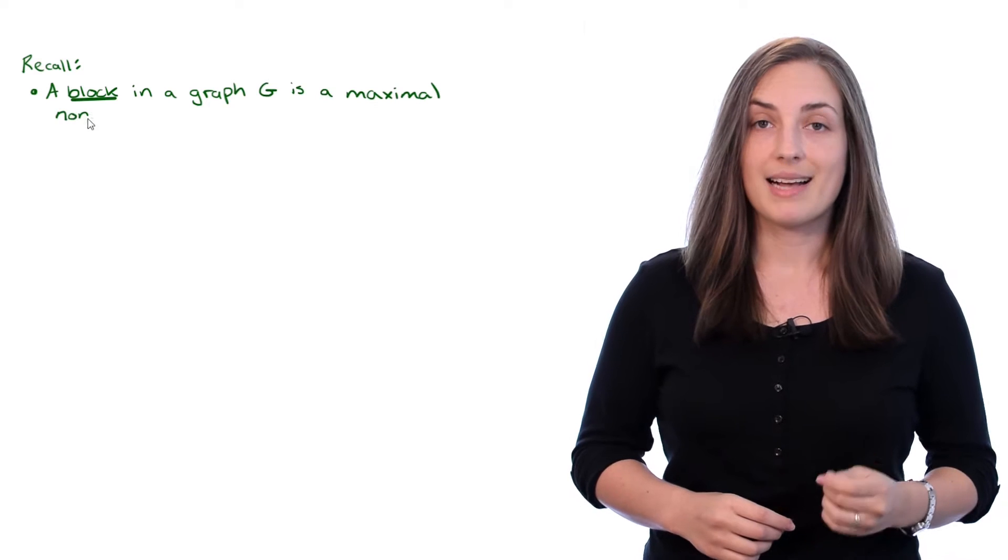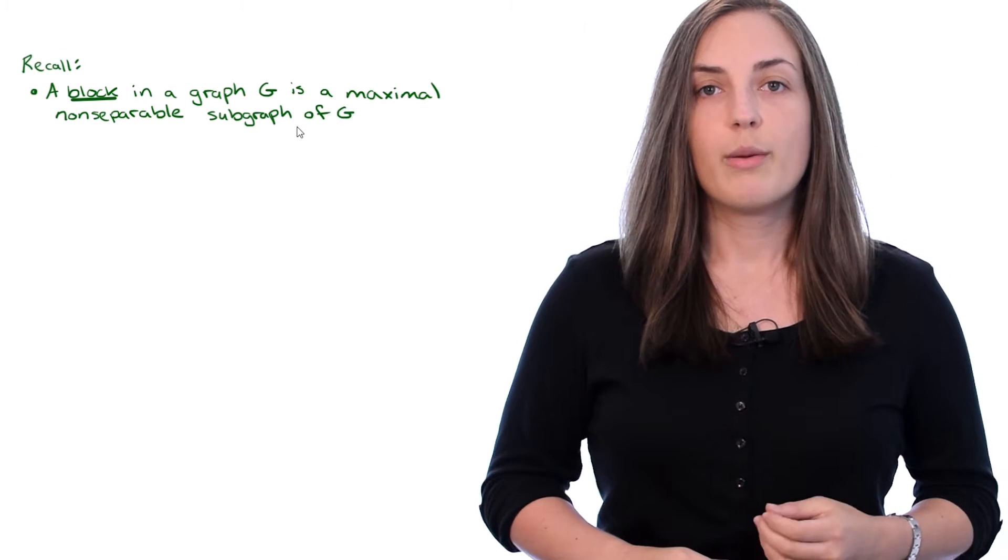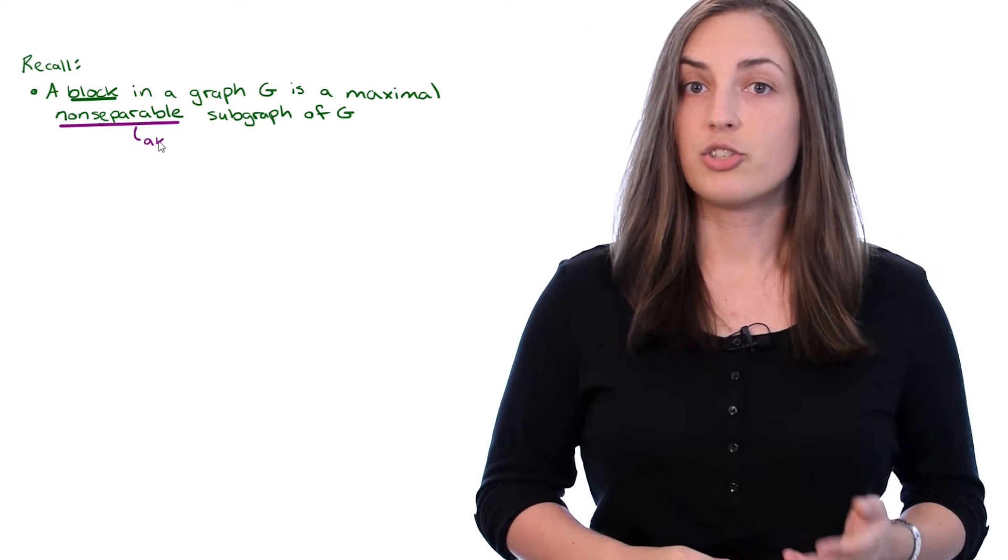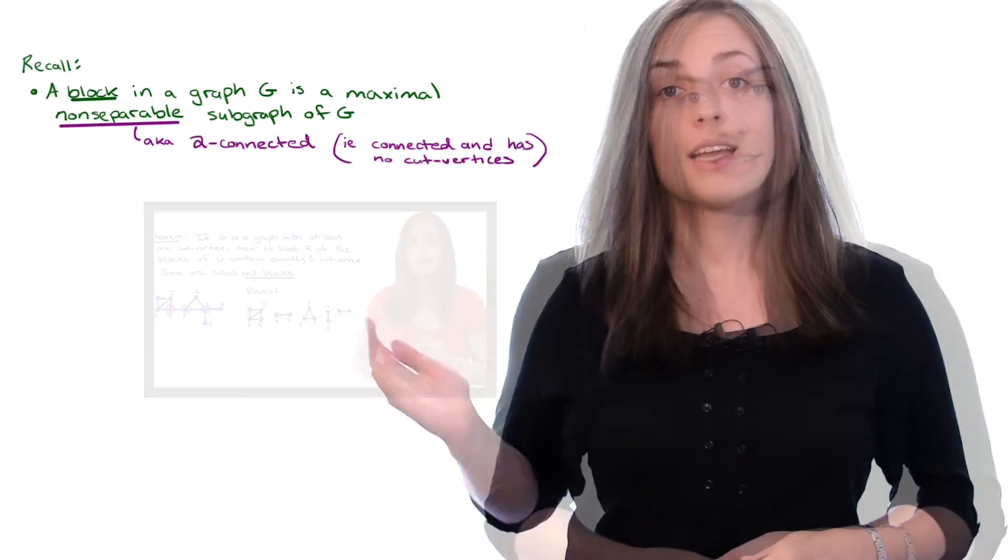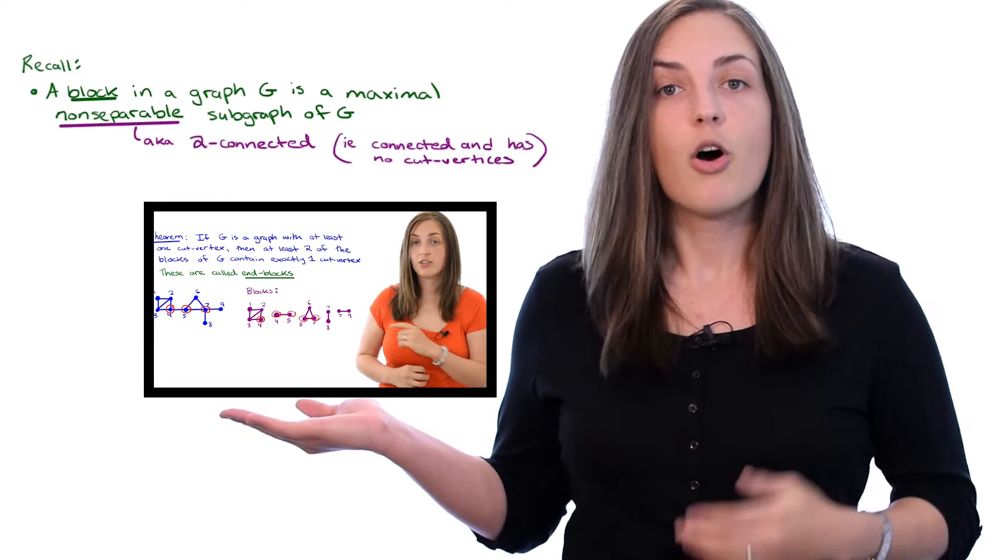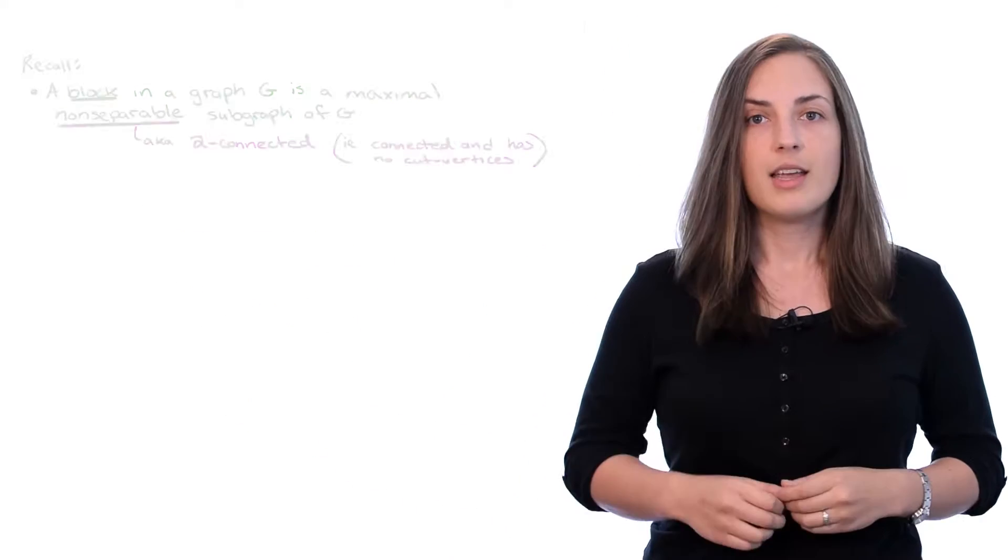a block in a graph is a maximal non-separable subgraph. Remember that non-separable is also called too-connected, which means that it is connected and has no cut vertices. Click here for a video about blocks in a graph, or see the links in the description below. Next,